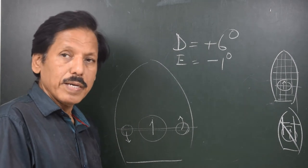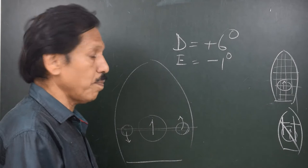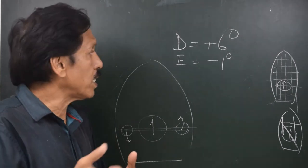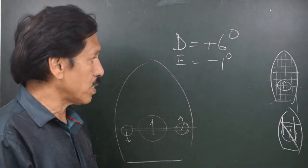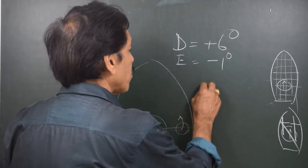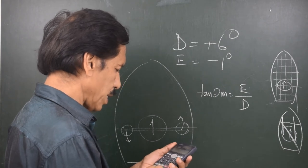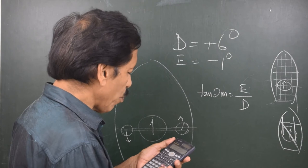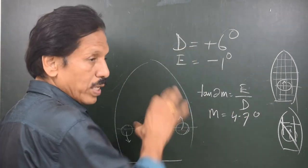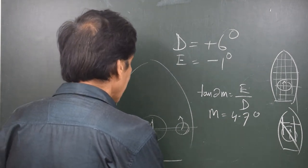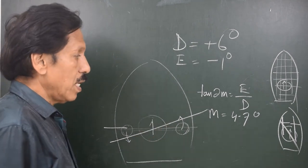Because D and E are of opposite name, we slew the spheres anti-clockwise — meaning the port-side sphere is slewed aft and the starboard sphere is slewed forward. The formula is: tan(2M) = E ÷ D = 1 ÷ 6. Applying inverse tangent gives 2M = 9.4 degrees, so M = 4.7 degrees. Because the signs are opposite, we are slewing anti-clockwise. We draw a line at 4.7 degrees to the athwartship line — this is slewing anti-clockwise by 4.7 degrees.